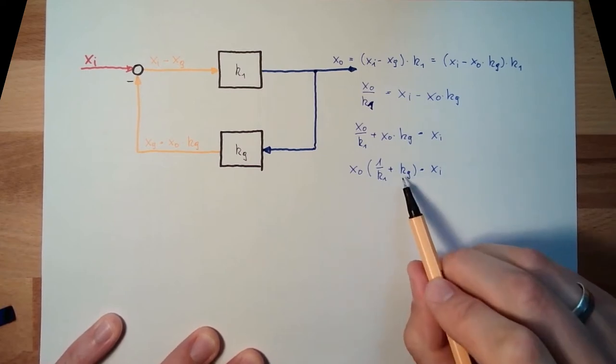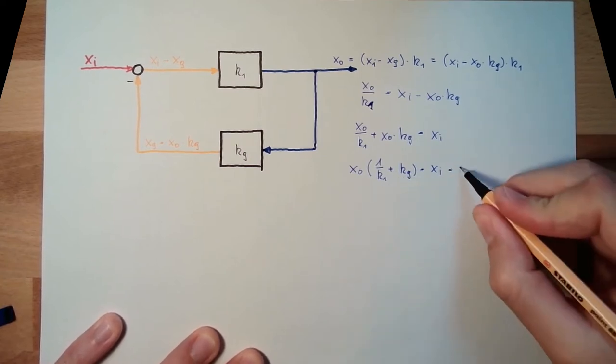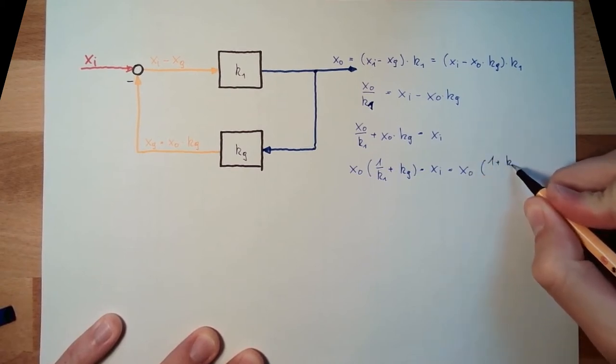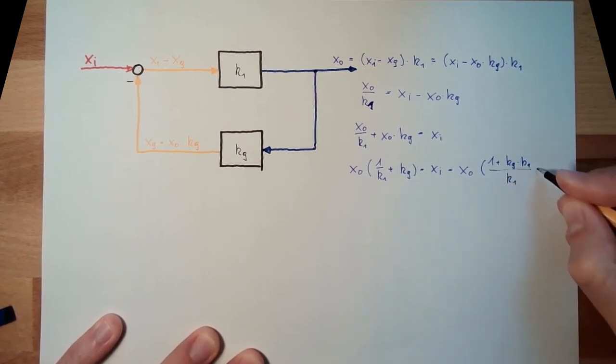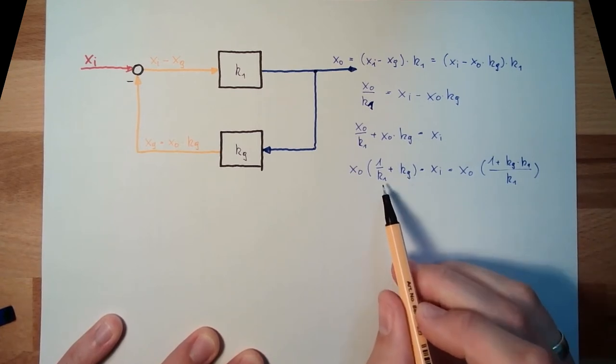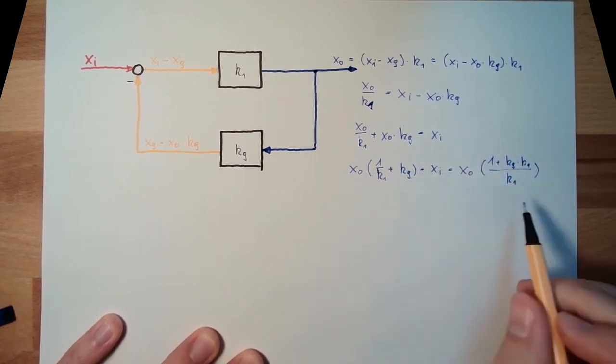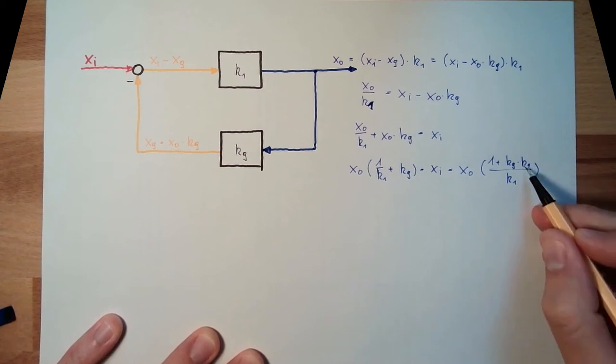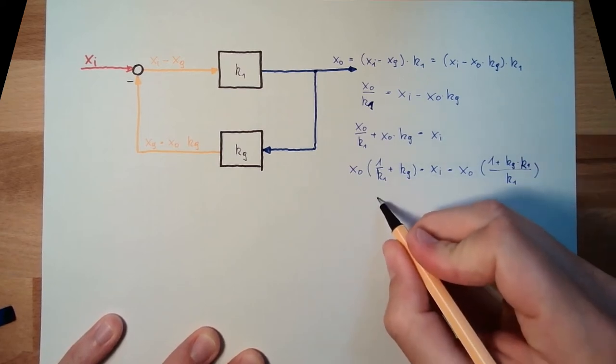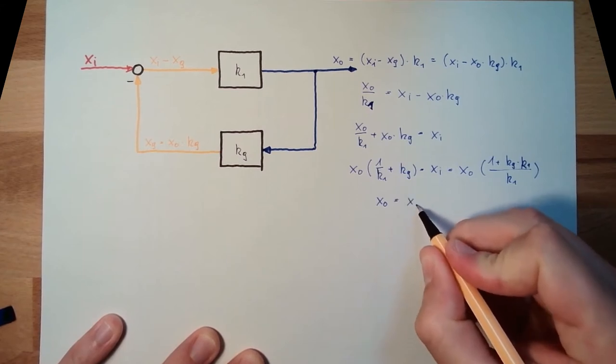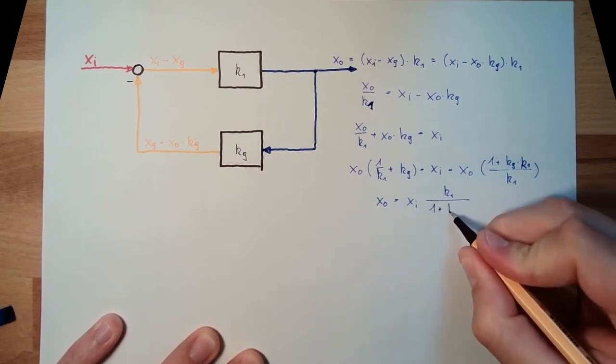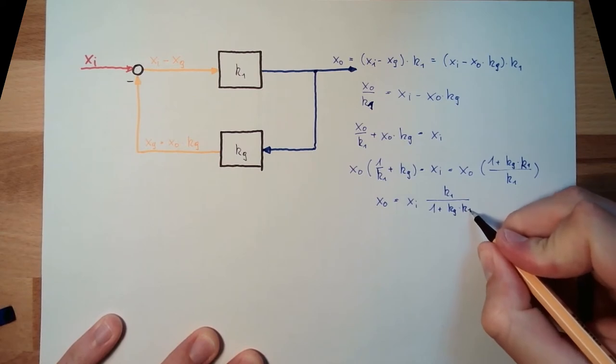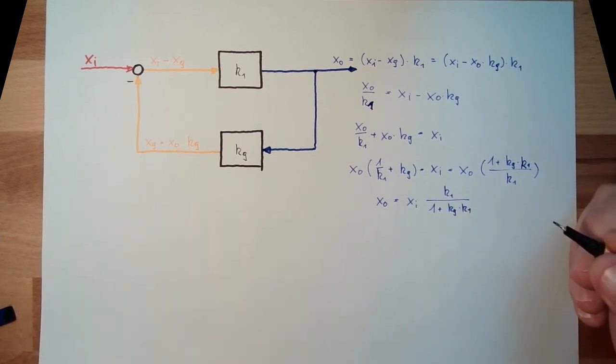Now, I will bring them to the same divisor, K1 divided by K1. Same divisor K1. And now, I can bring it to the other side. So, XO equals XI K1 divided by 1 plus KG K1.